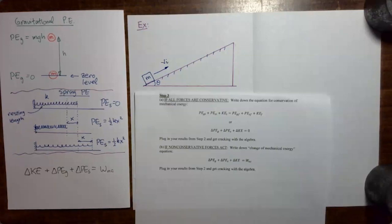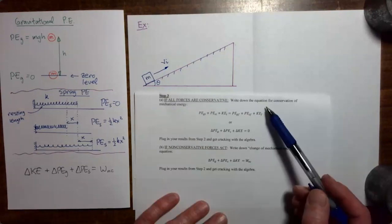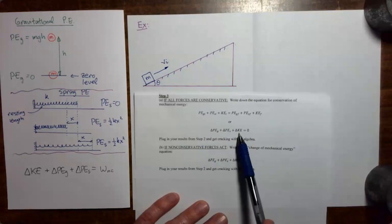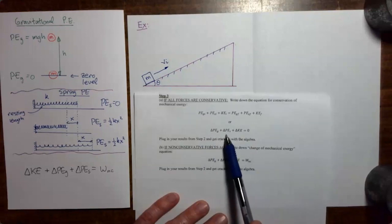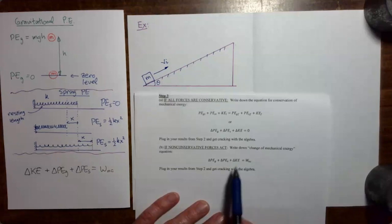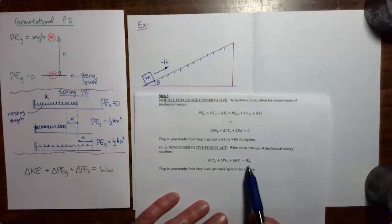In the previous video, I showed you how the idea of conservation of mechanical energy could be modified so that we could still use mechanical energy concepts to solve problems even when non-conservative forces are acting. In a process where all forces acting are conservative, the change in kinetic energy plus the change in potential energy is equal to zero. If non-conservative forces are acting, the change in kinetic energy plus the change in potential energy equals the work done by non-conservative forces.